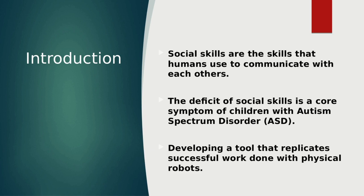Social skills are the skills that a human uses to communicate with each other verbally and non-verbally. The deficit of social skills is the mechanism of children with autism spectrum disorder. Children with ASD who haven't received social skill intervention at an early age can show signs of regression to the extent of becoming non-verbal. Therefore, early intervention is essential for children with ASD.